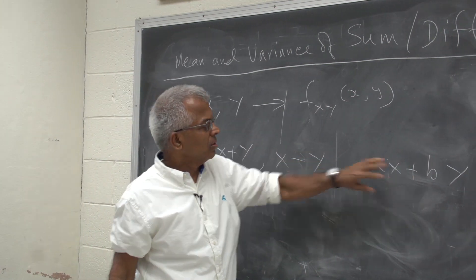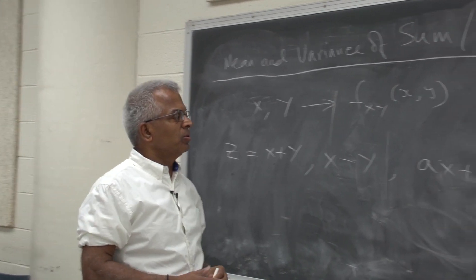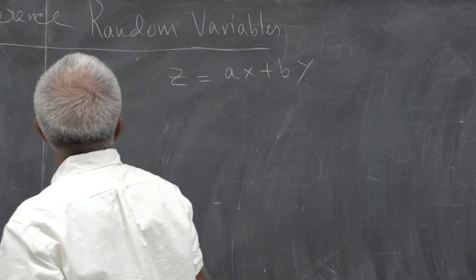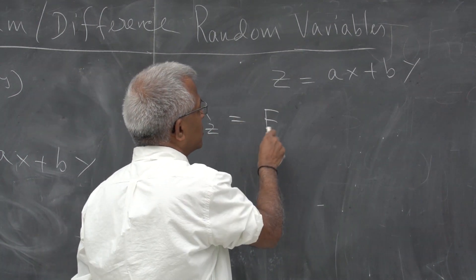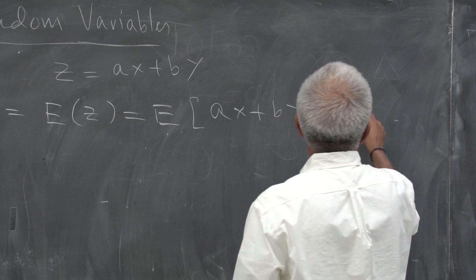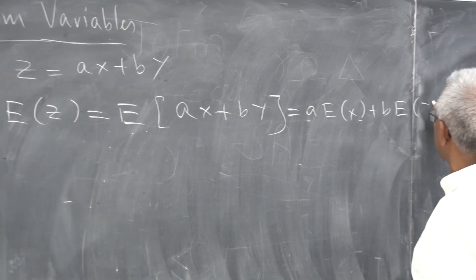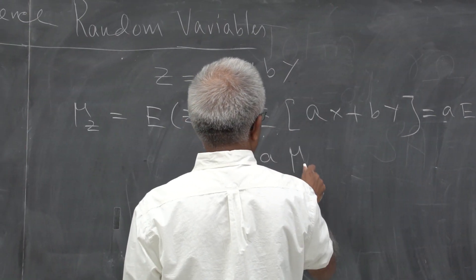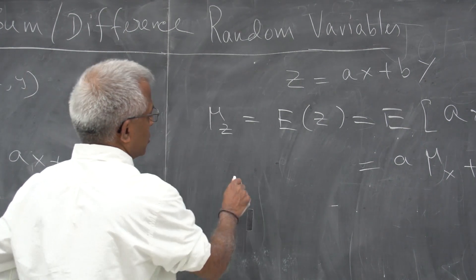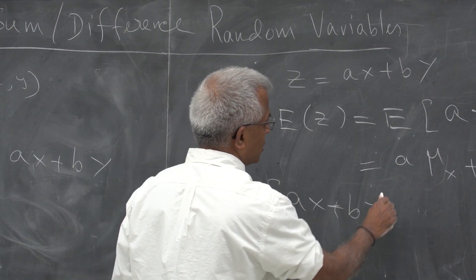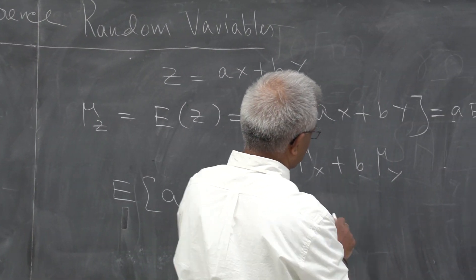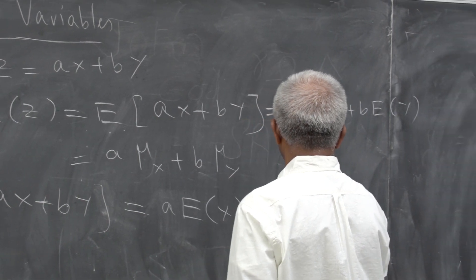Notice that if we can handle the general case, then all these are special cases. Starting with z equal to ax plus by, the mean of z is the expected value of z, which is the expected value of ax plus by. That equals a multiplied by the expected value of x, plus b multiplied by the expected value of y. So we get a·μx plus b·μy — linearity holds.